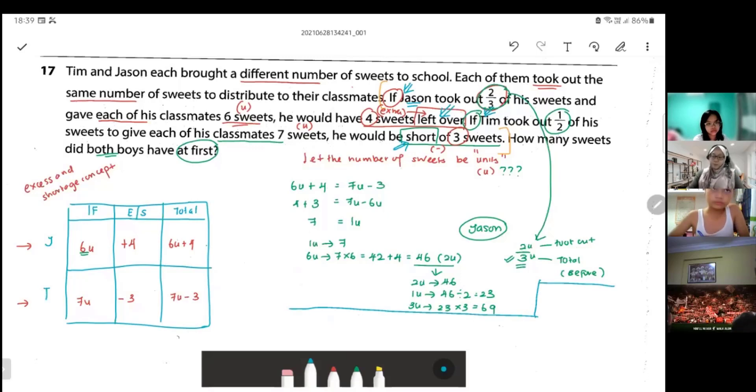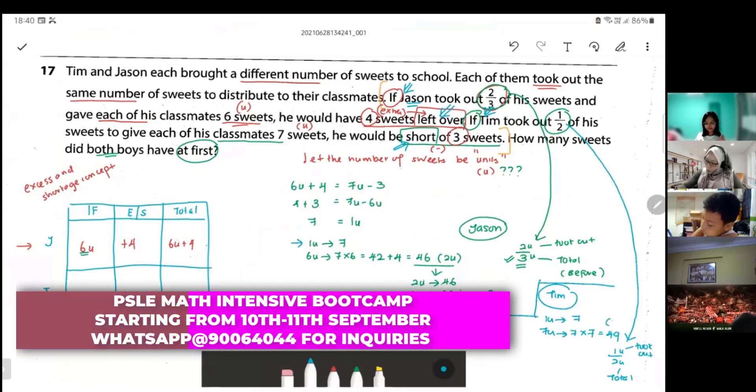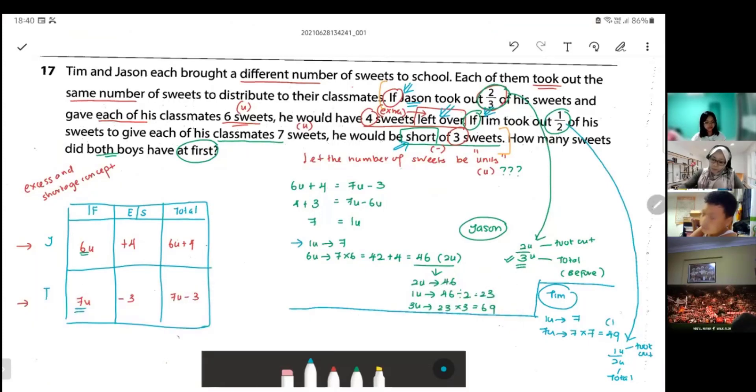Now let's find out about Tim. If you look at Tim, we go back to this one. One unit is seven. Tim have how many units at first? Tim have seven units, which is what I want. Seven unit is seven times seven equals to 49. Now if you look at Tim, we bring it down, it's half. He took out one unit out of his total of two units. Which means my 49 is actually one unit.